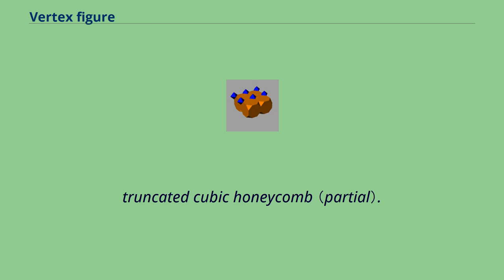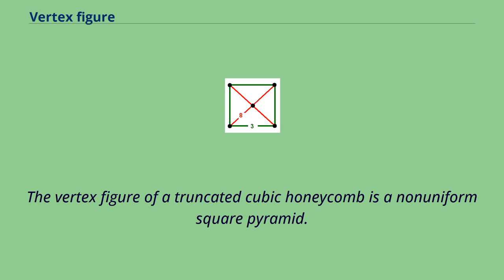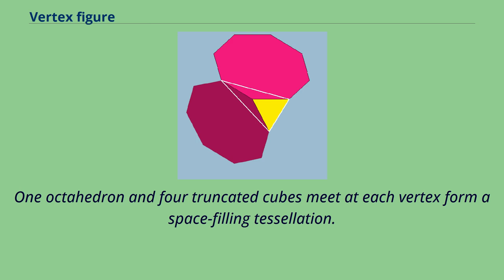The vertex figure of a truncated cubic honeycomb is a non-uniform square pyramid. One octahedron and four truncated cubes meet at each vertex to form a space-filling tessellation.